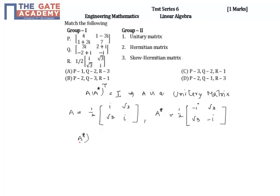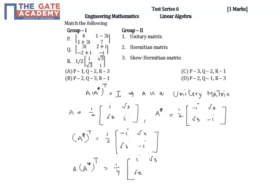Now A-conjugate transpose means we interchange the rows and columns, giving [[-i, √3], [√3, -i]] — we get the same matrix. Now computing A into A-conjugate whole transpose: we take (1/4) out since both matrices have factor (1/2), giving A = [[i, √3], [√3, i]] multiplied by [[-i, √3], [√3, -i]].